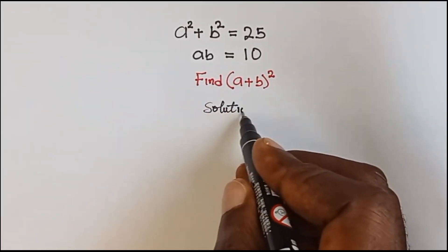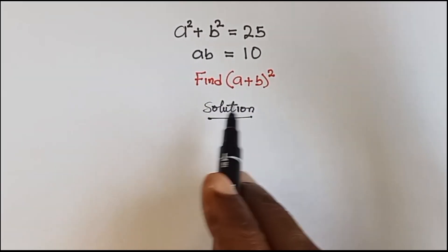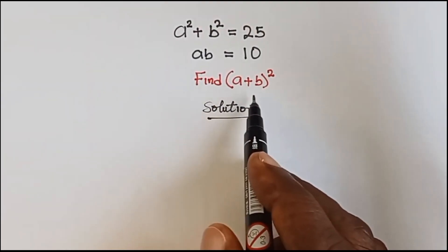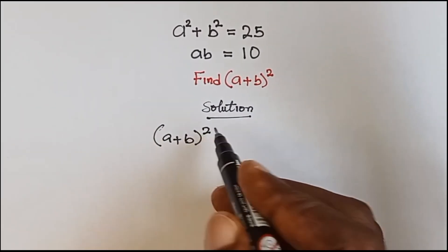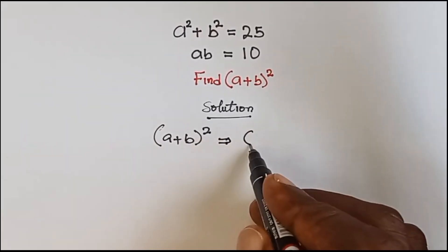So now what do we do? I'm going to show you the shortest way to do this. For us to find (a + b)², we have (a + b)² and this is the same thing as (a + b)(a + b).